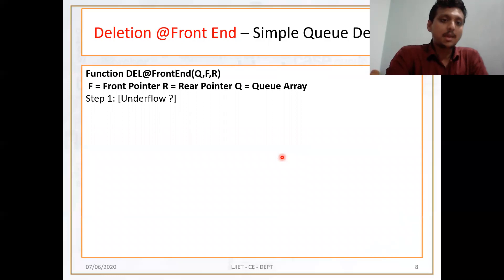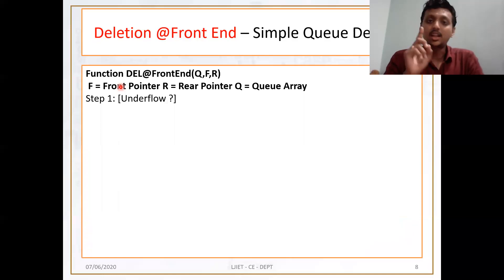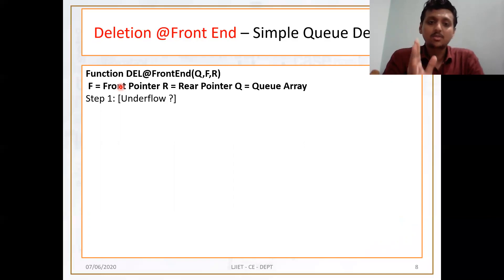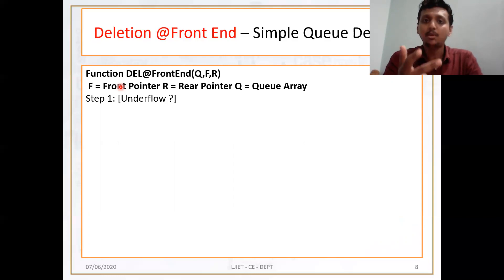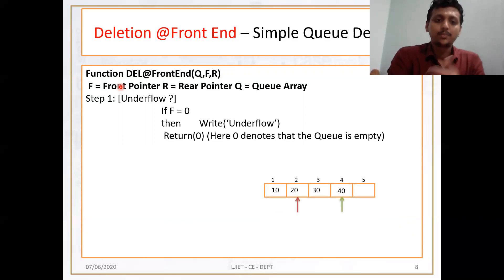First, I am writing the function. If any algorithm returns something, you need to write a function. Then write the algorithm name and the parameters to pass. I need only three parameters: Q represents my queue, F is for the front pointer, R is for the rear pointer. The name of the algorithm is Delete at Front End. The first condition is underflow: if my front pointer is at 0, then write underflow and return 0.